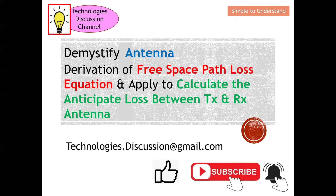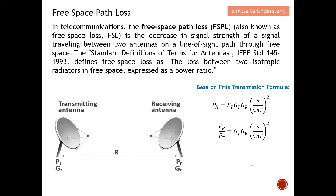Let's quickly understand what free space path loss actually is. In antenna communication, free space path loss, known as FSPL or free space loss FSL, is the decrease in signal strength of a signal traveling between two antennas — a transmitting antenna and a receiving antenna — under a condition with line of sight. This is the standard definition of the term.